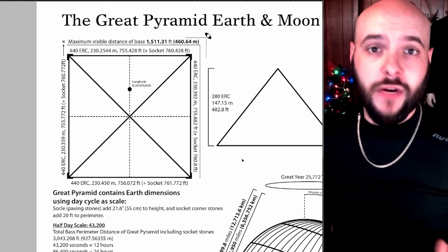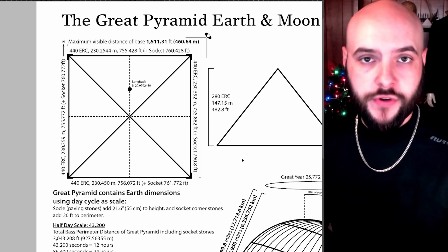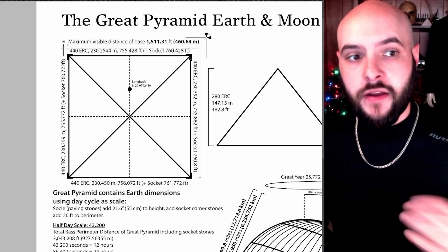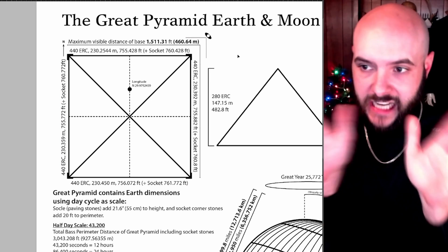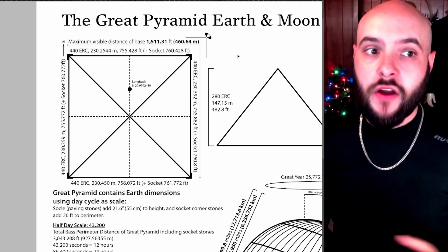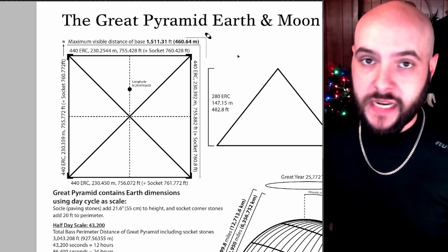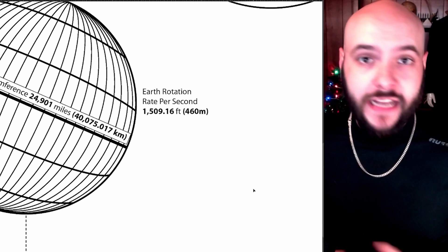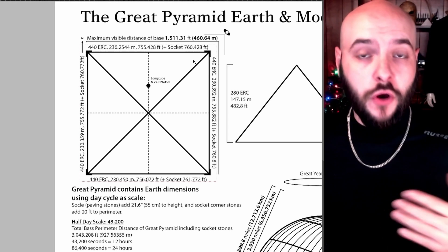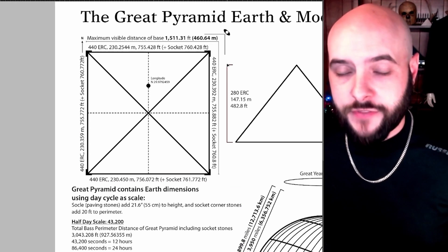But it doesn't matter because the Great Pyramid defines a second for us. If you were standing at one of the corners of the Great Pyramid, and here let's just say we're using the northeast corner, staring at the structure, the total maximum distance you can see of its base is 1,511.31 feet or 460.64 meters, which is how much the planet rotates in one second.